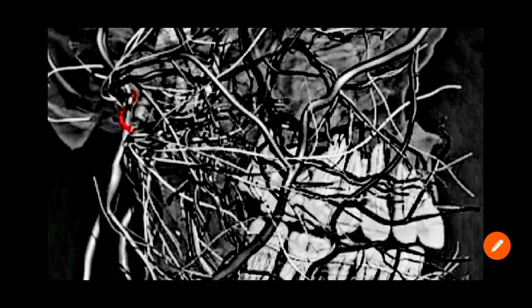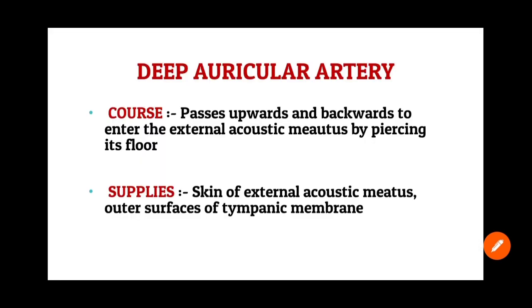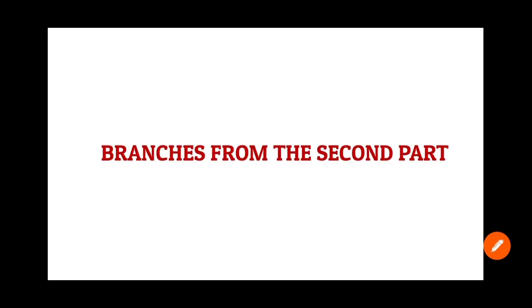D stands for deep auricular artery. The deep auricular artery moves upwards and backwards and enters the external acoustic meatus by piercing its floor. It supplies the skin of the external acoustic meatus and the outer surface of the tympanic membrane. That covers all arteries from the first part.